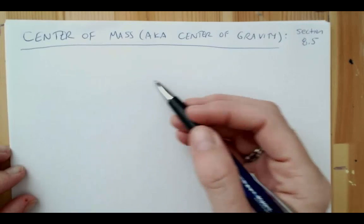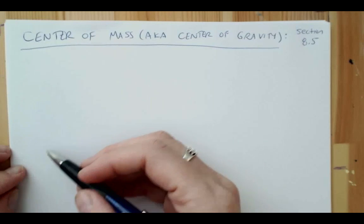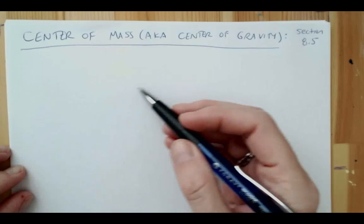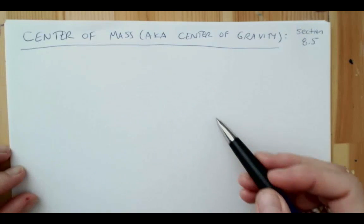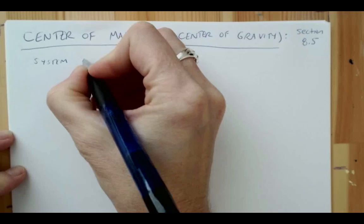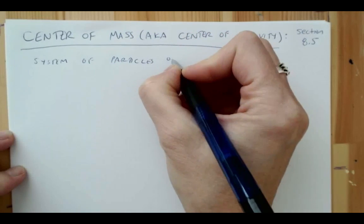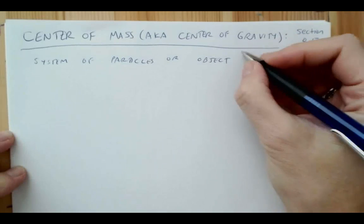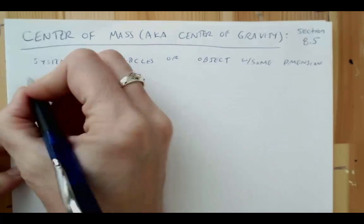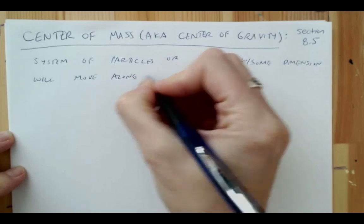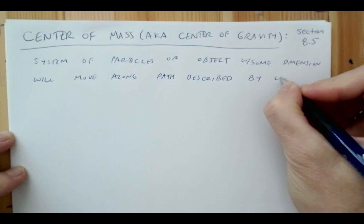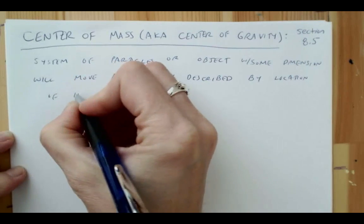The parabolic trajectory that something will follow will actually be the trajectory of its center of mass. So even as a basketball player leaps through the air and changes his body position, the actual center of mass of that person will follow a nice parabolic trajectory. We can say that either a system of particles or an object or a person with some dimension will move along a path described by the location of its center of mass.